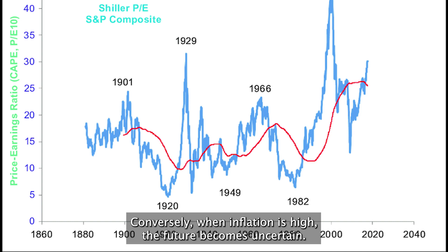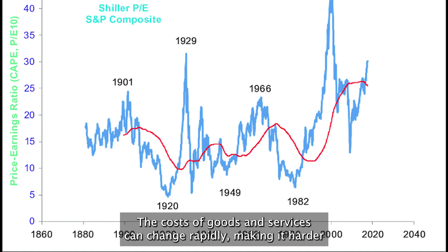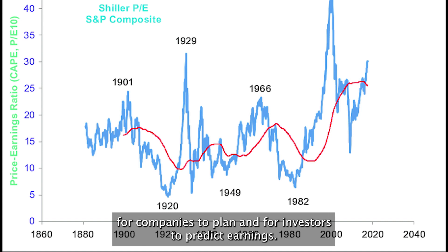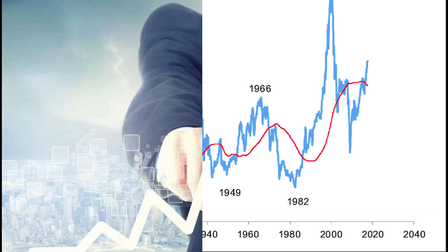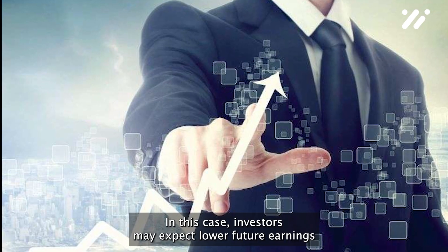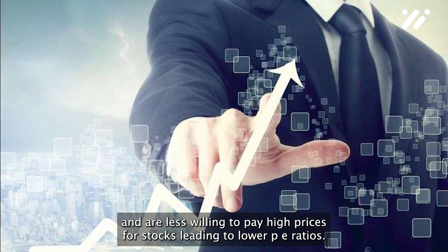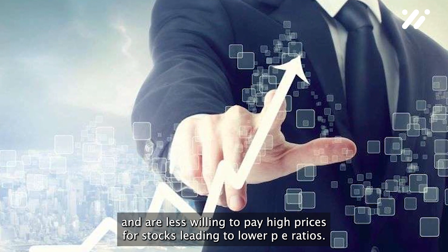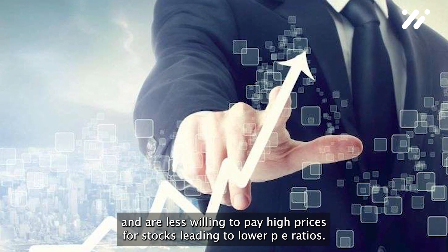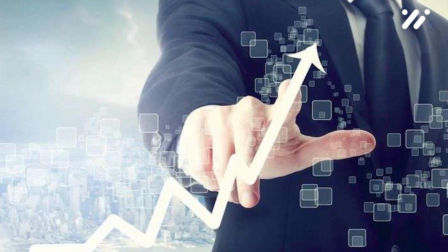Conversely, when inflation is high, the future becomes uncertain. The costs of goods and services can change rapidly, making it harder for companies to plan and for investors to predict earnings. In this case, investors may expect lower future earnings and are less willing to pay high prices for stocks, leading to lower P.E. ratios.